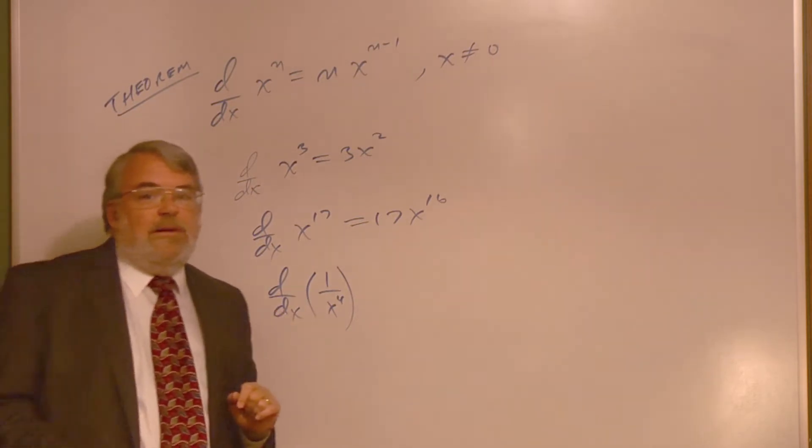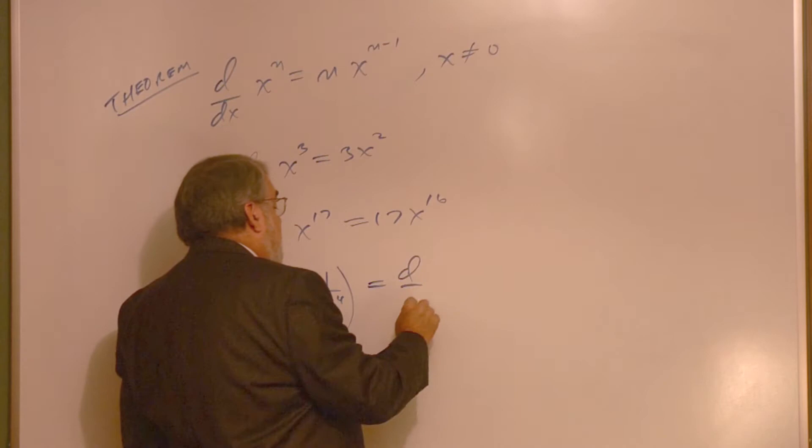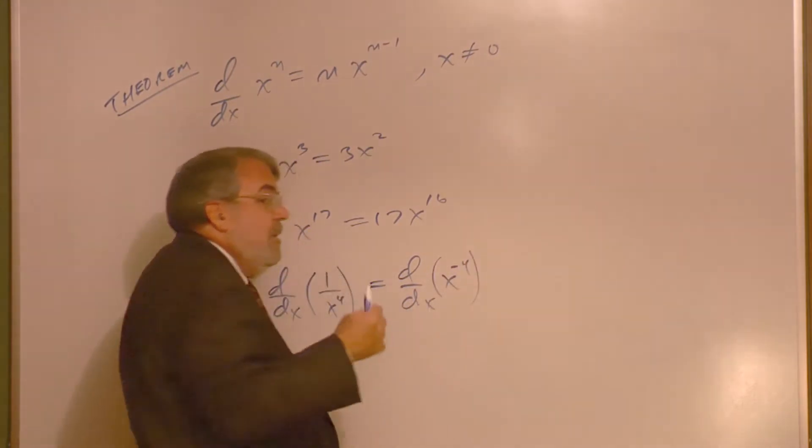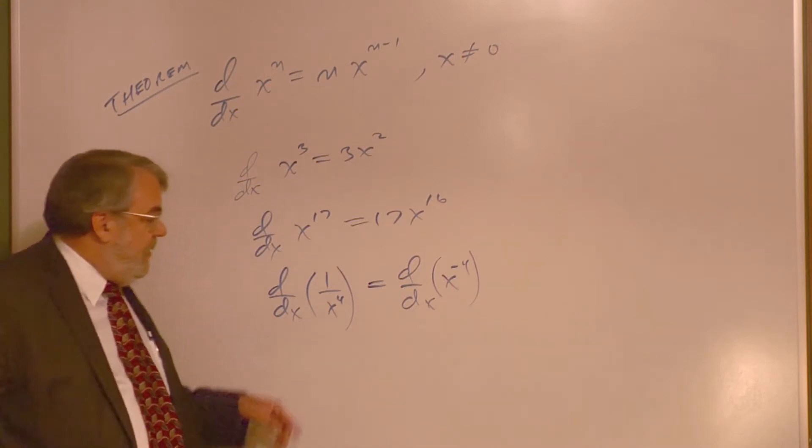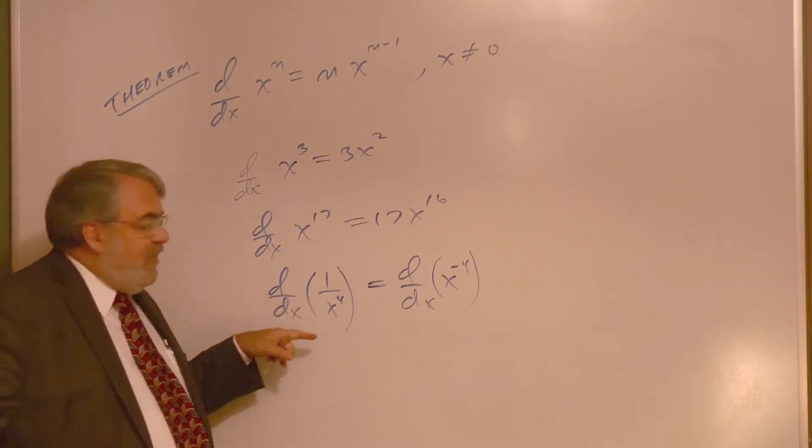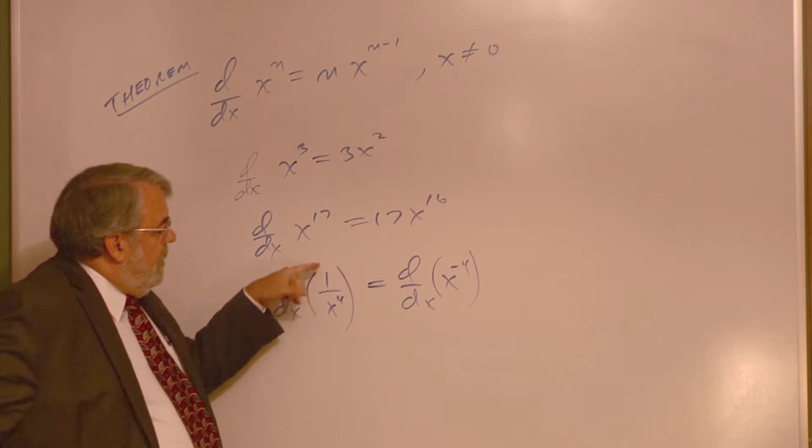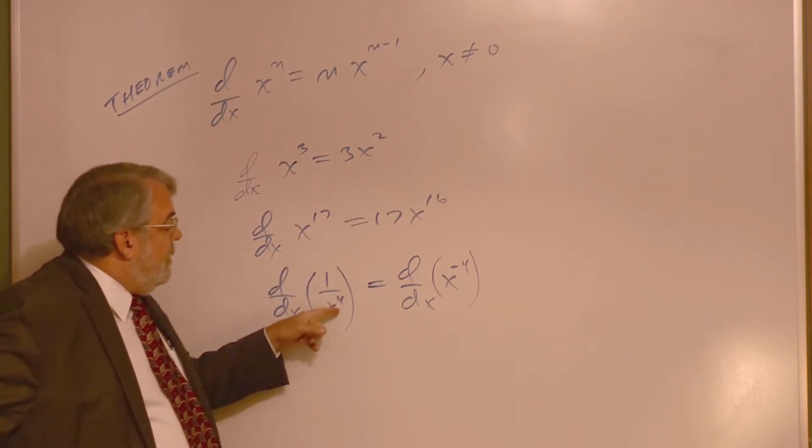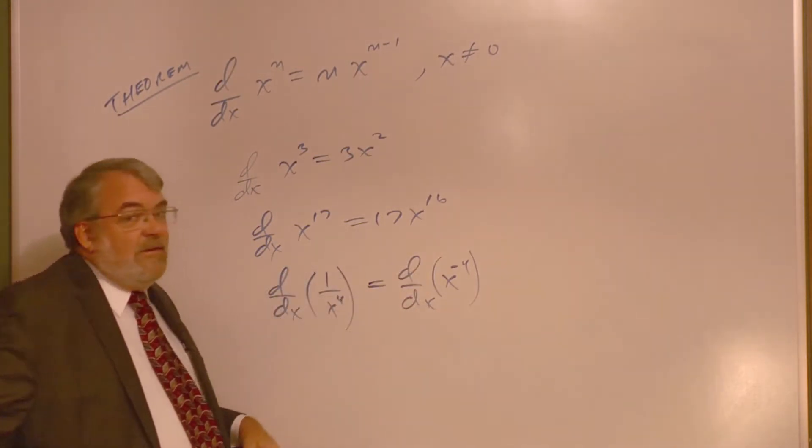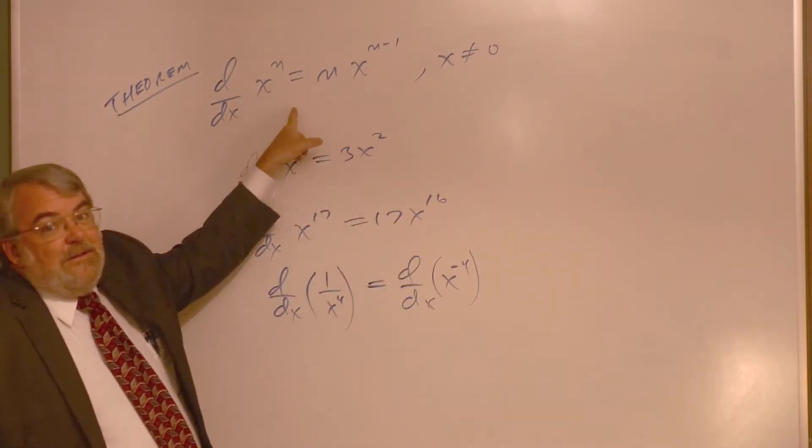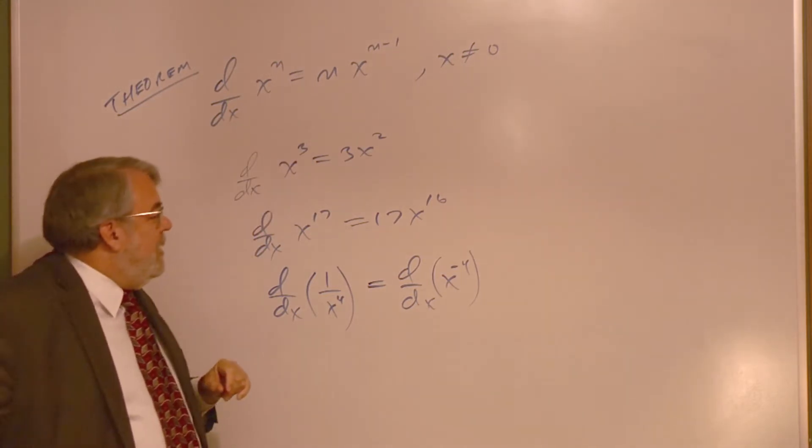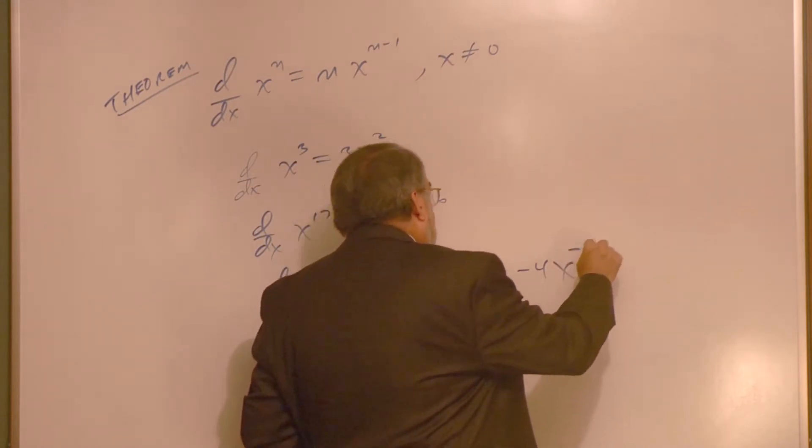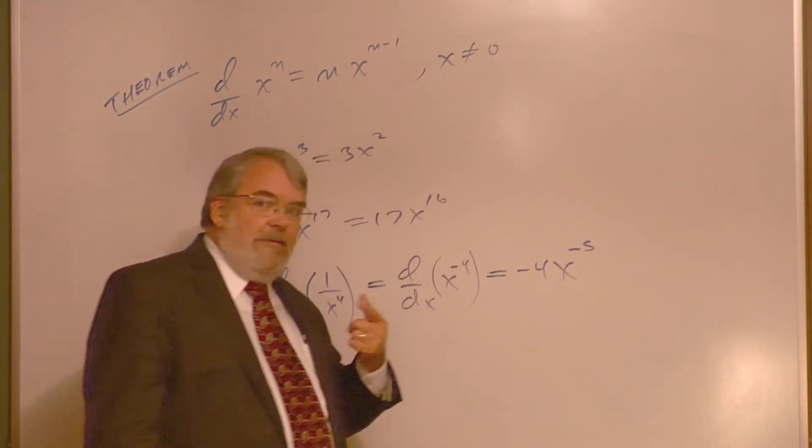If we look at 1 divided by x to the fourth as x to the negative 4, that's using an exponent rule. If I move an algebra term either from bottom to top or top to bottom, then the exponent sign changes. So I bring x to the fourth upstairs and it becomes x to the minus 4. Now I fit the theorem and we can take this derivative.